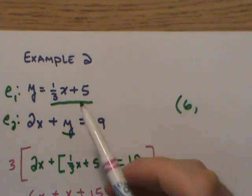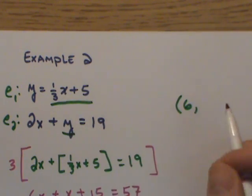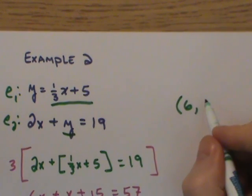If I plug six into here, a third of six is two, two plus five is seven, and so my intersection point would be six, seven.